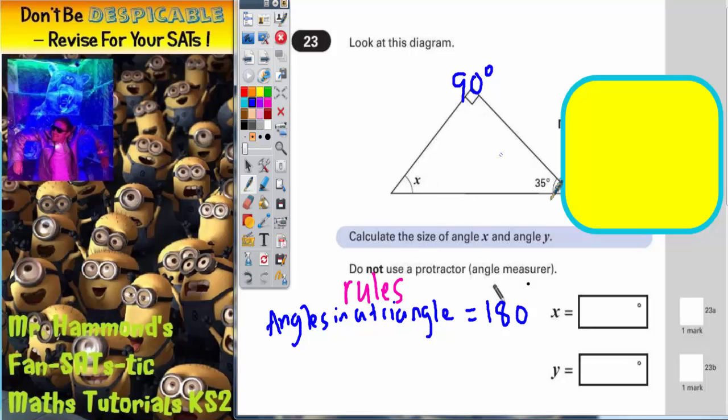So to find angle x, if we add the two together that we know to see what we've got. So we've got 90 plus 35. What does that make? 0 and 5 is 5, 9 and 3 is 12. So so far we've got 125 degrees, but we need to make it up to 180. So if we find the difference from 125 up to 180, we'll get this angle x here. So let's find the difference.